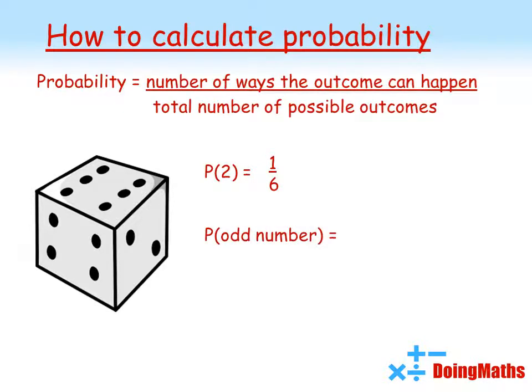What about the probability that I roll an odd number? Well, there are three odd numbers on a die. One, three and five. There are still six possible outcomes in total. So my probability is three-sixths, which I can simplify to a half if I want.